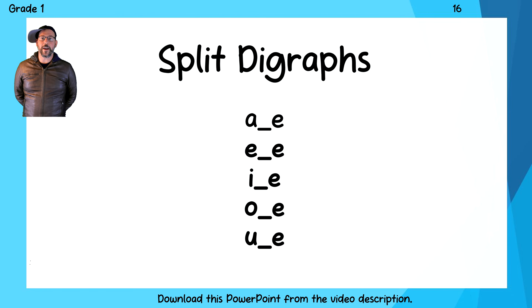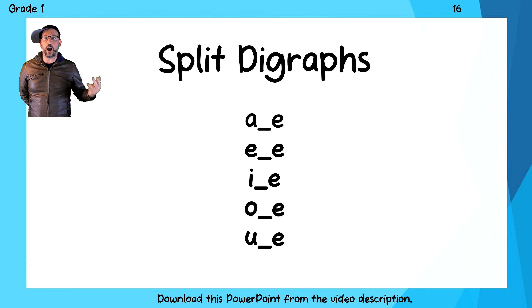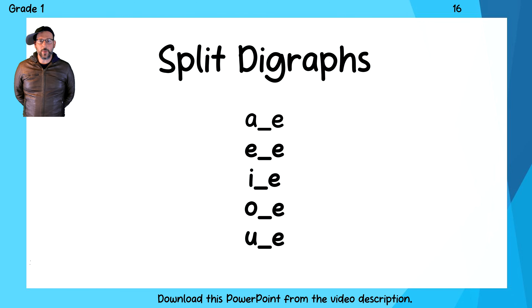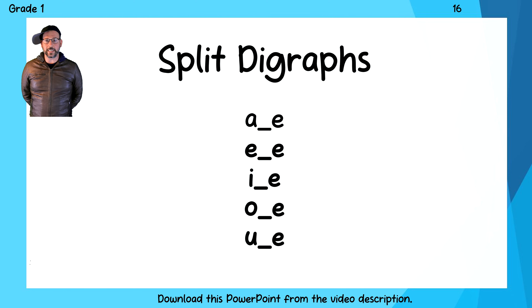So instead of the vowel saying A, E, I, A, or U, the vowel can now say A, E, I, O, and U. Anyway, let's start the list.